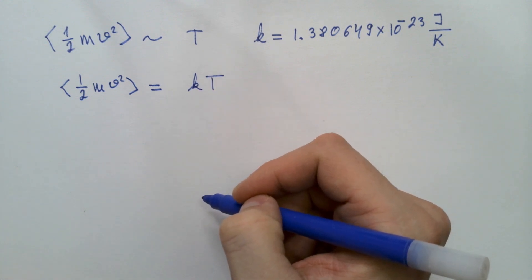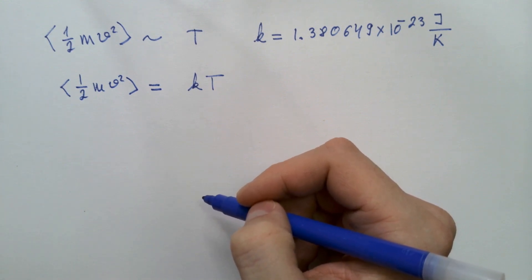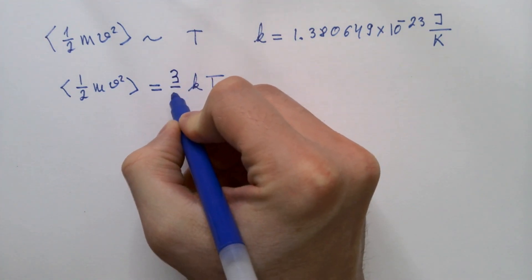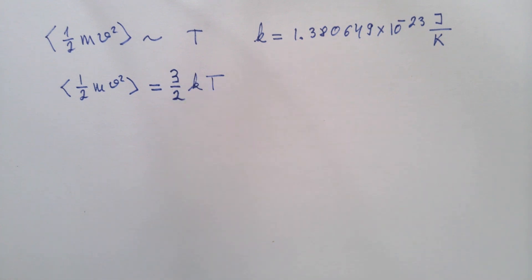However, again, thanks to different historical reasons, people decided to introduce one more factor of proportionality, and that is 3 over 2. And we will see why this factor is really a very nice convenience.